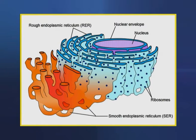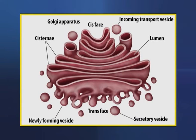Protein glycosylation takes place inside the lumen of the endoplasmic reticulum and the Golgi complex, organelles that play central roles in protein trafficking. The N-linked glycosylation begins in the ER and continues in the Golgi complex, whereas the O-linked glycosylation takes place exclusively in the Golgi complex.